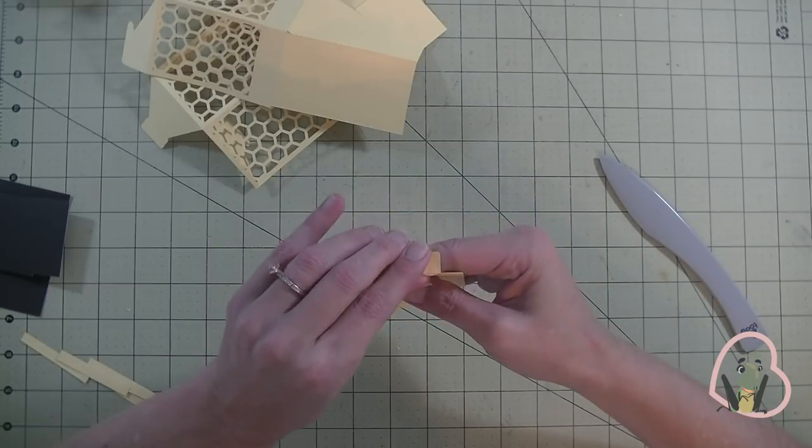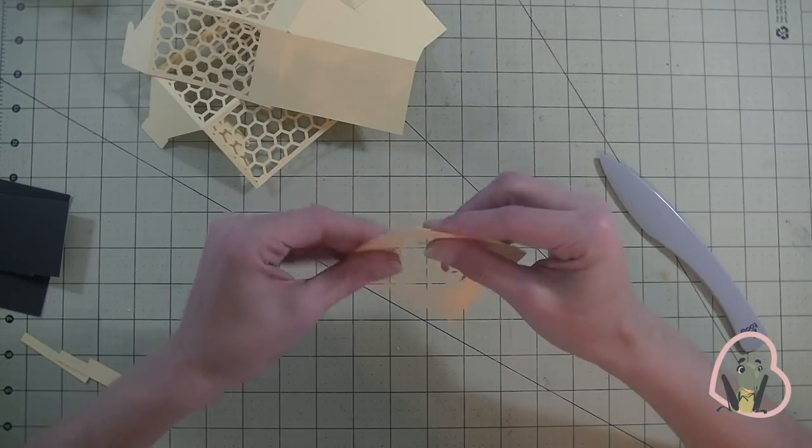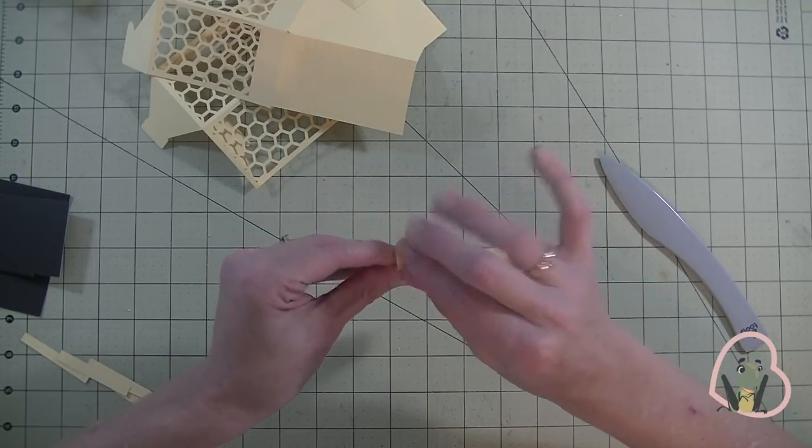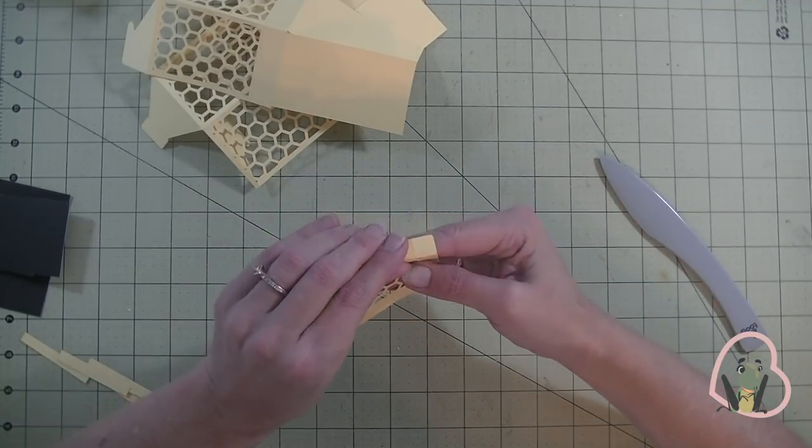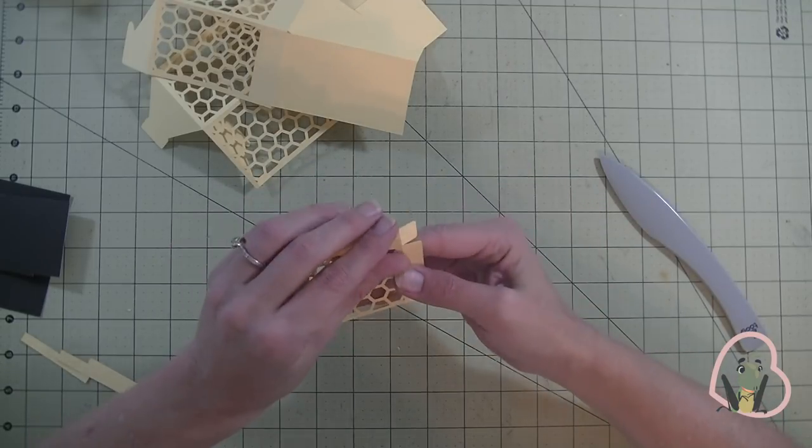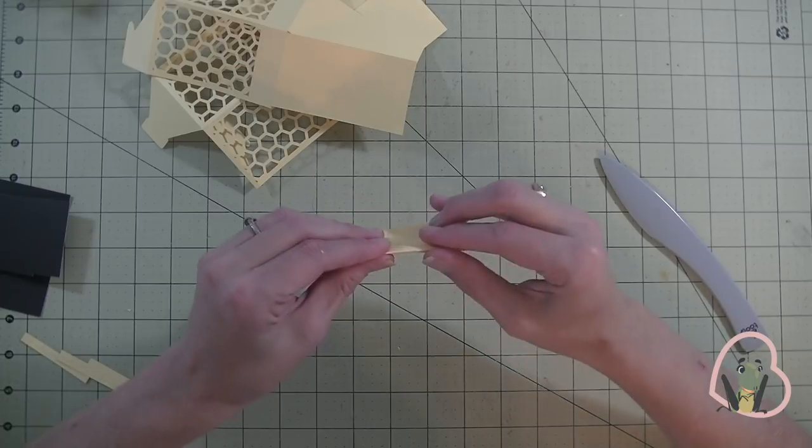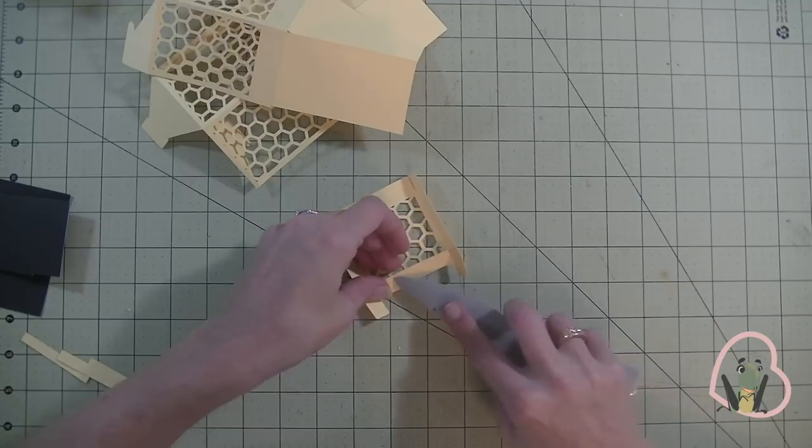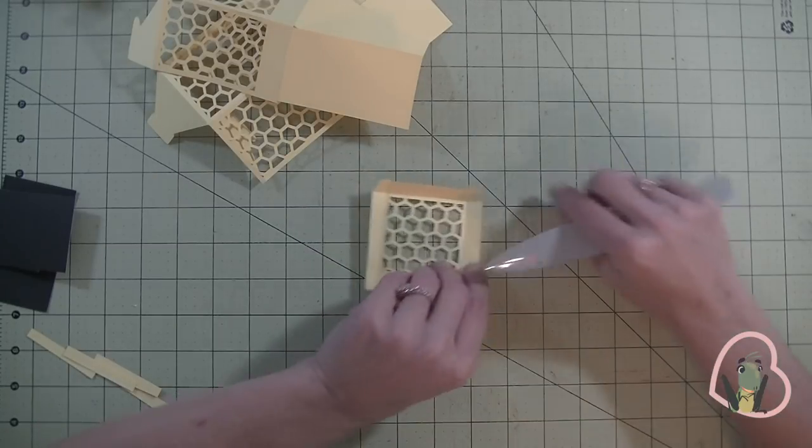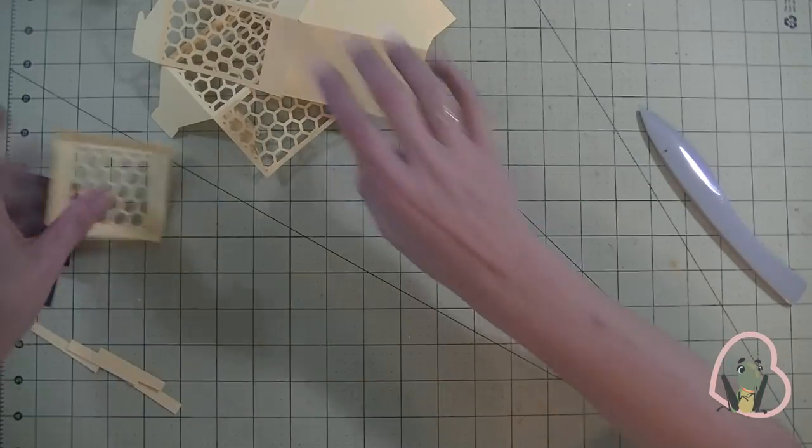Let's grab this part, the lid. And again, the same idea. Just finger press the score marks first, just to kind of get them going. You can always lay your ruler next to it as well. So I got the sides of that one done. Let's do this side here. Now let's go ahead and crease them. And our last one there. So a lot of scoring.